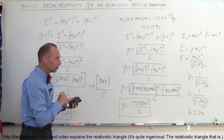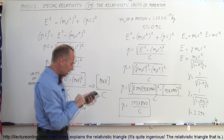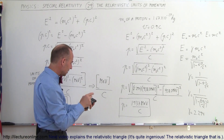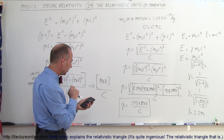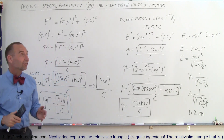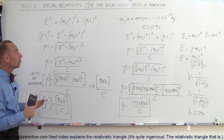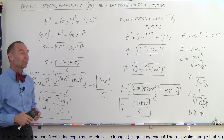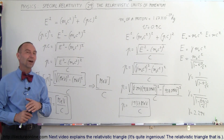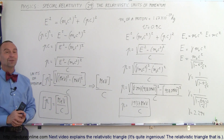One more quick check to make sure this is correct: 938 squared, take the square root — 937, looks like we're good. And that's how we can show that the units for momentum are million electron volts divided by the speed of light, and that's how it's done.